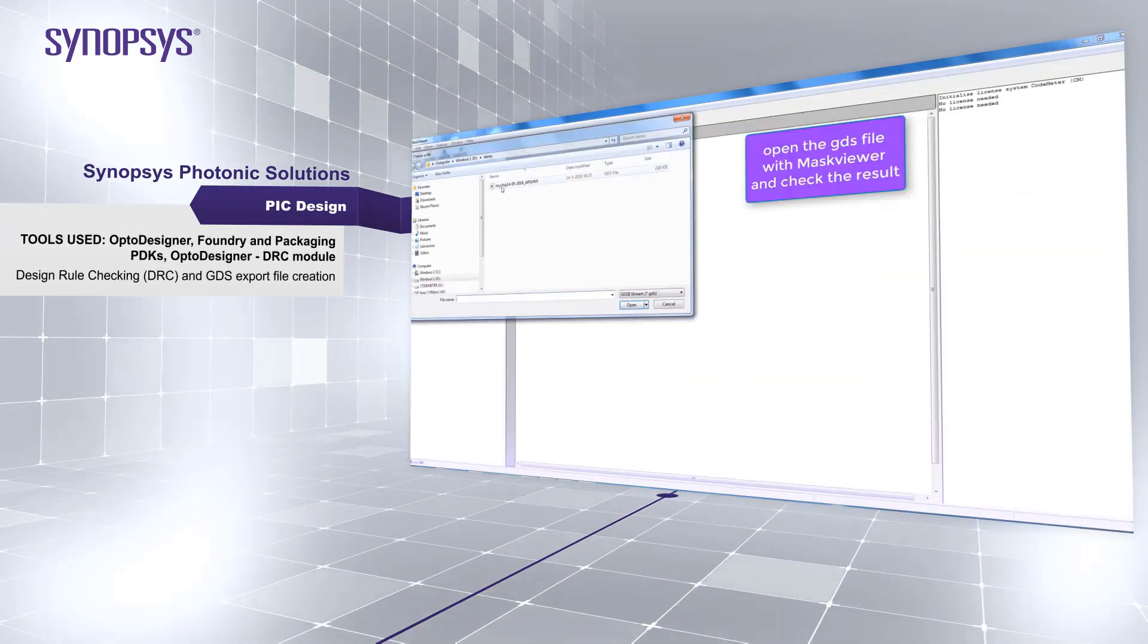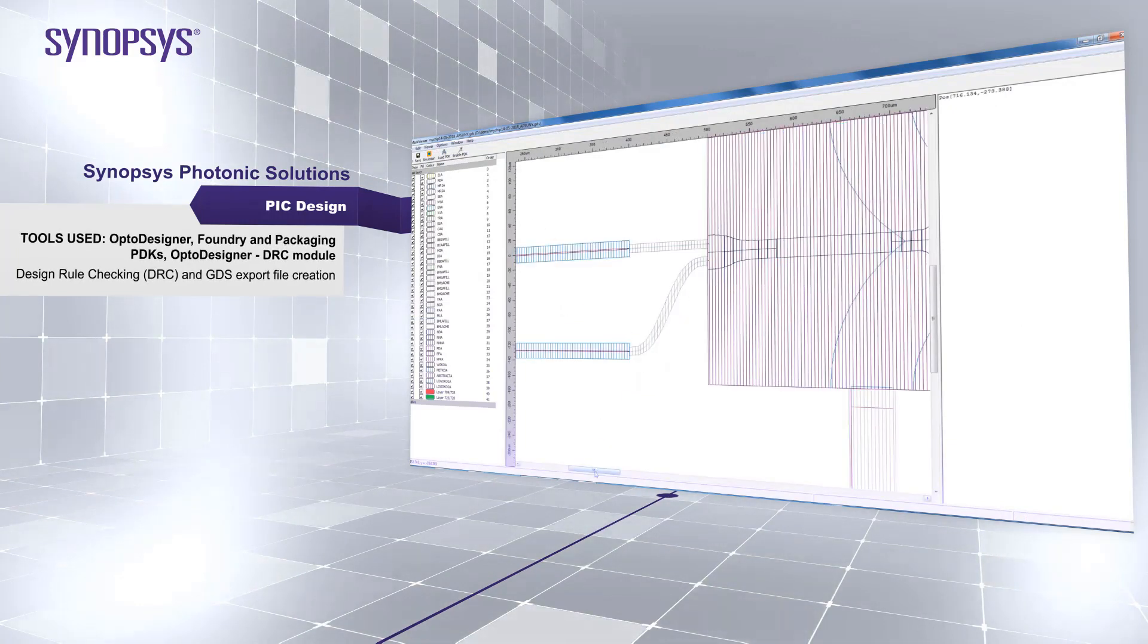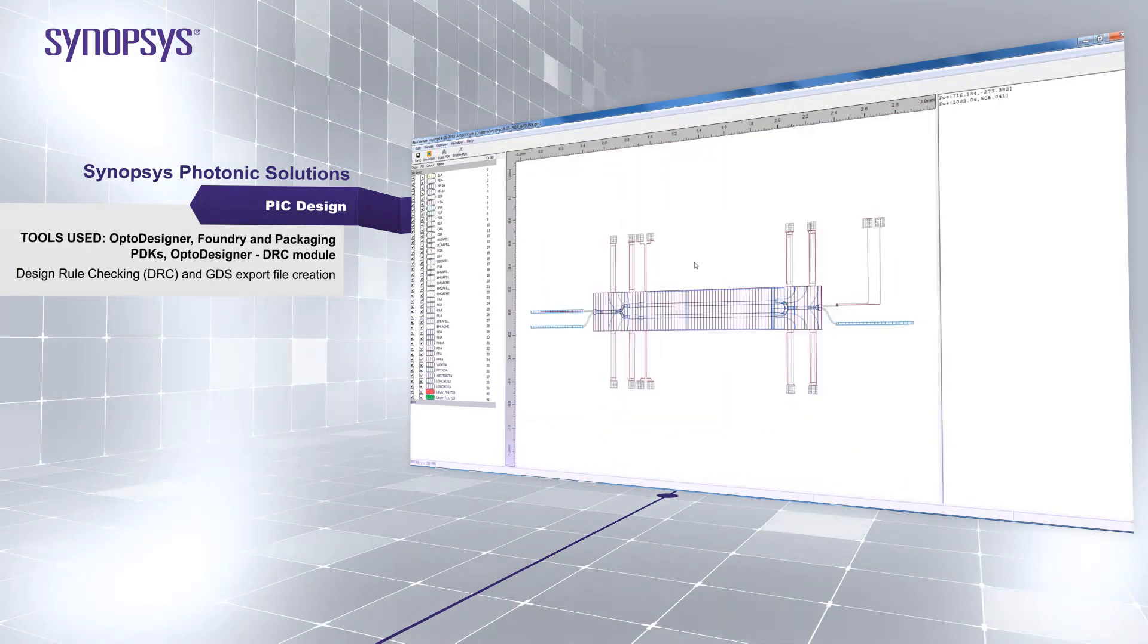The last step is to generate the export files, including the GDS, which is the standard MASC file format accepted by the foundries.